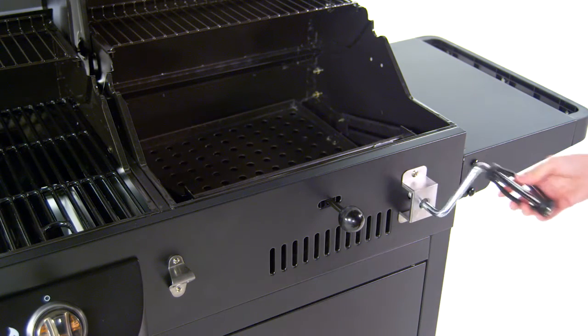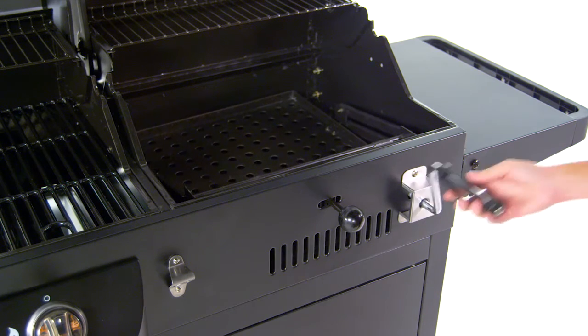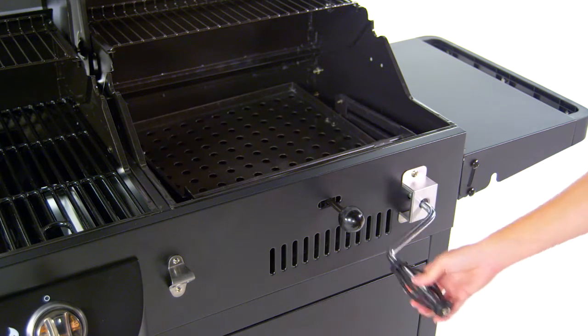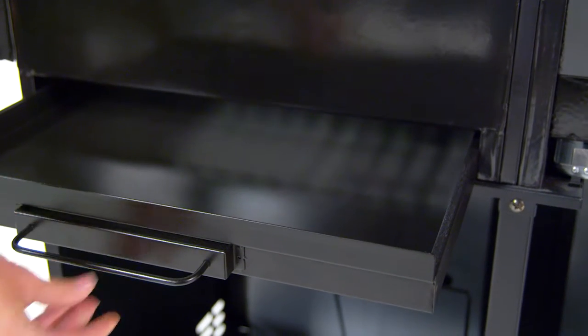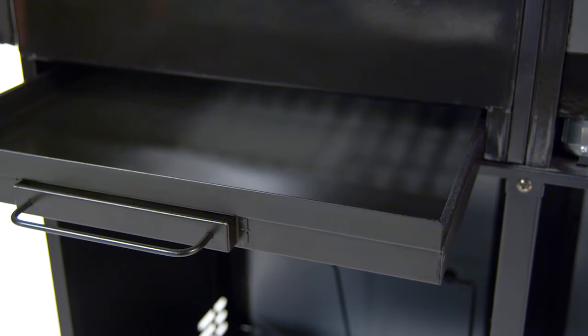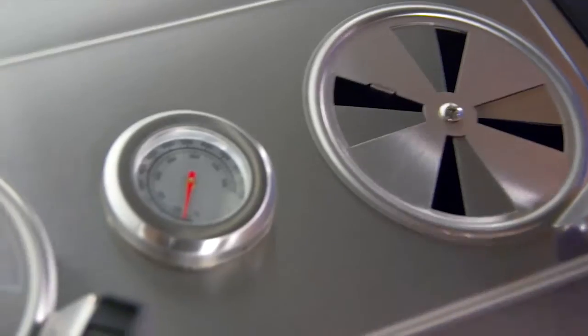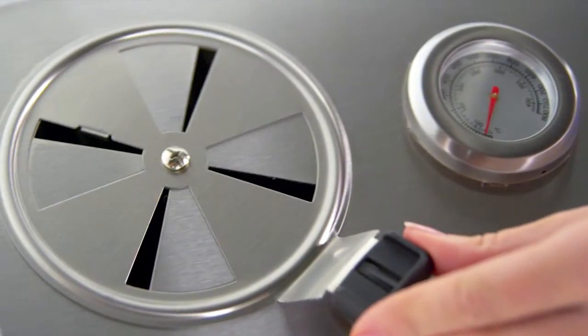The charcoal side features an adjustment crank for raising and lowering the charcoal tray for customized temperature control, a removable ash pan for convenient disposal of ashes before and after use, and adjustable lid dampers for additional temperature control.